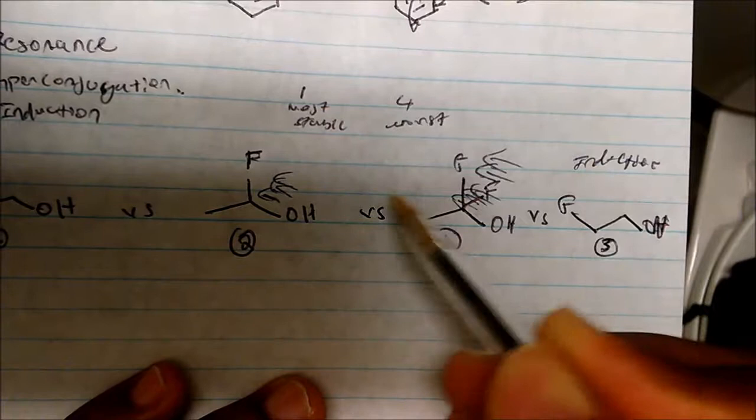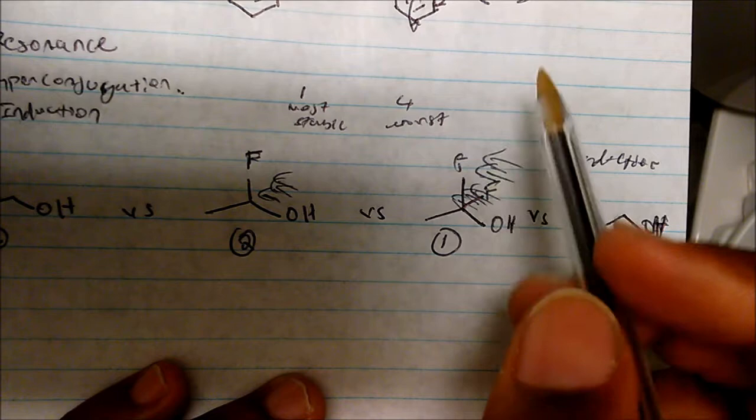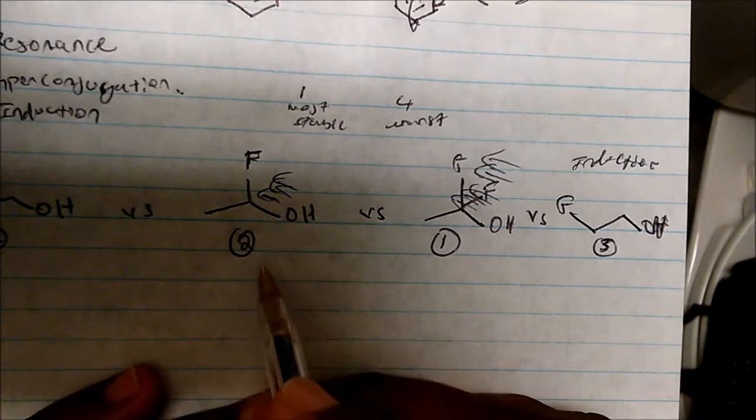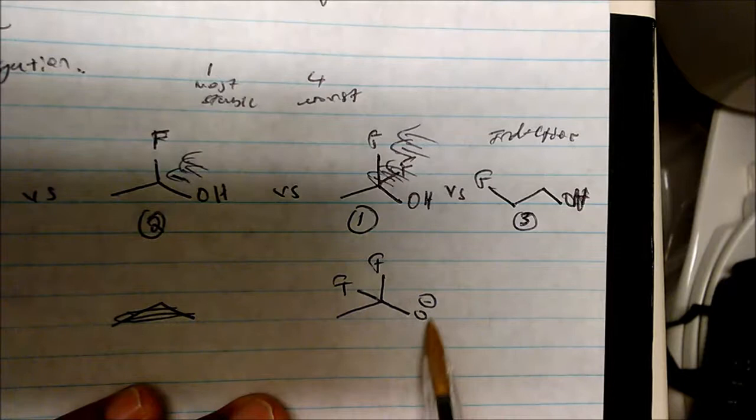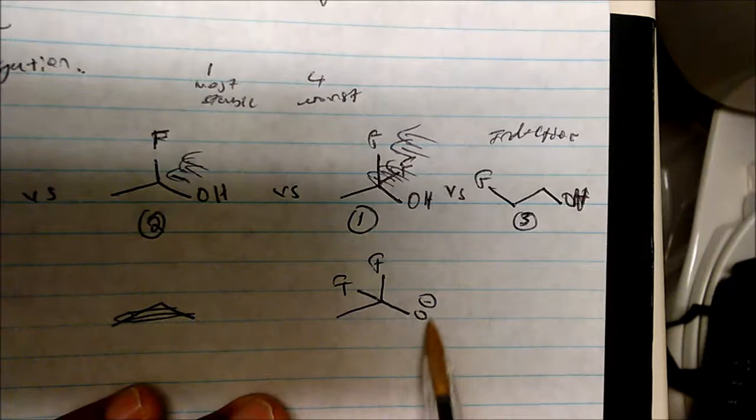Those two fluorines are pulling electron density away, and that's very strong because you have two electronegative atoms — this is hyperconjugation. Induction refers to how close the electronegative atoms are to your OH group in terms of position, while hyperconjugation refers to the direct electron-withdrawing effect on the OH group itself. The conjugate base with two electronegative atoms is much more stable than the one with only one, which is why the difluoro alcohol is the most acidic.